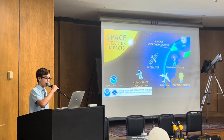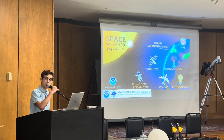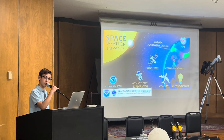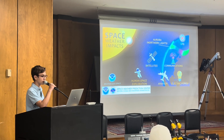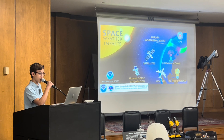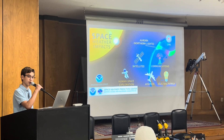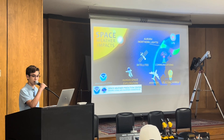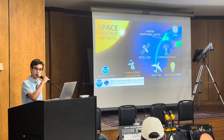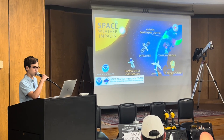Space weather can impact things on Earth in several ways. X-rays can interfere with high-frequency radio communications, and ultraviolet light results in heating of the upper atmosphere, causing it to expand further out into space. Satellites in low Earth orbit experience increased drag due to a denser concentration of plasma particles, which alters their orbit. If appropriate alterations to the orbital path cannot be made, the lifetime of the satellite can be substantially reduced.